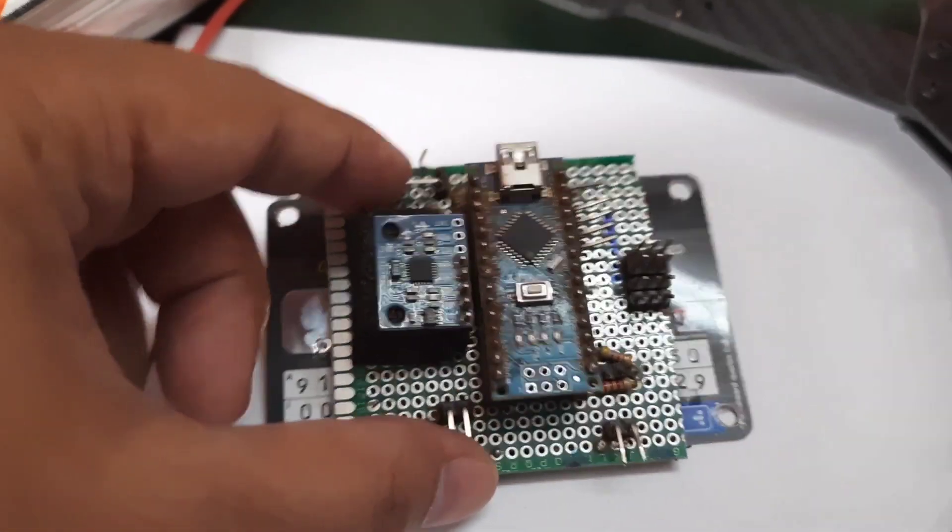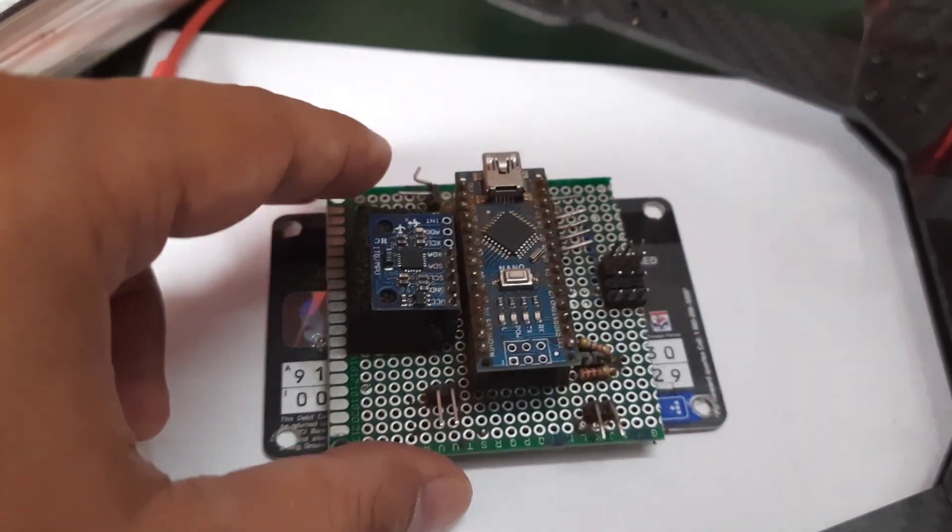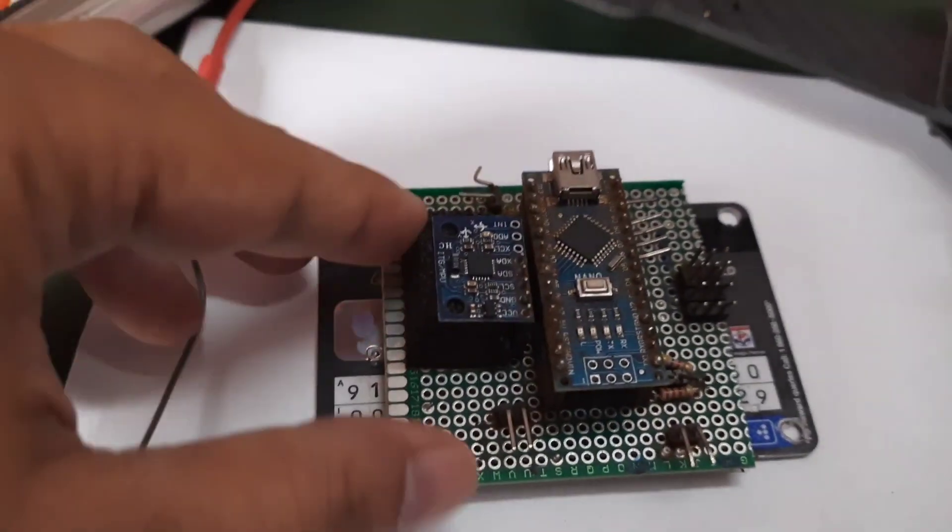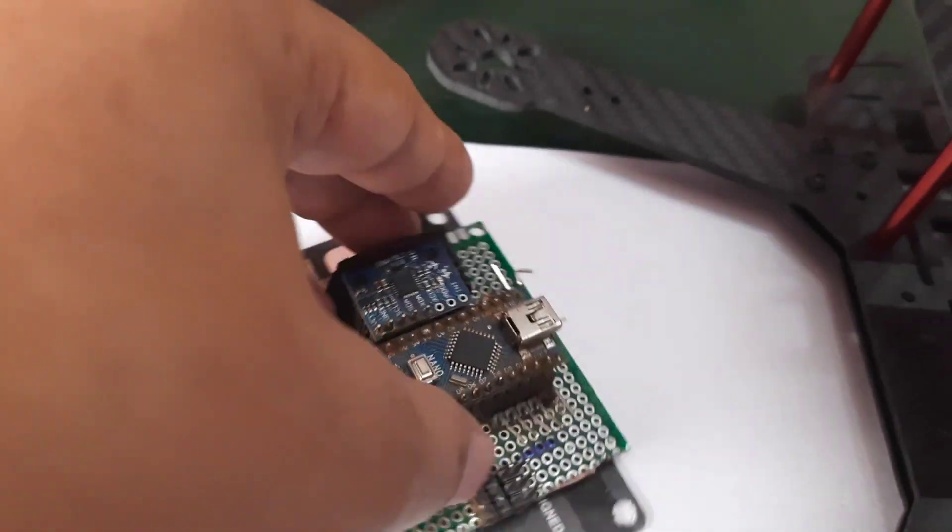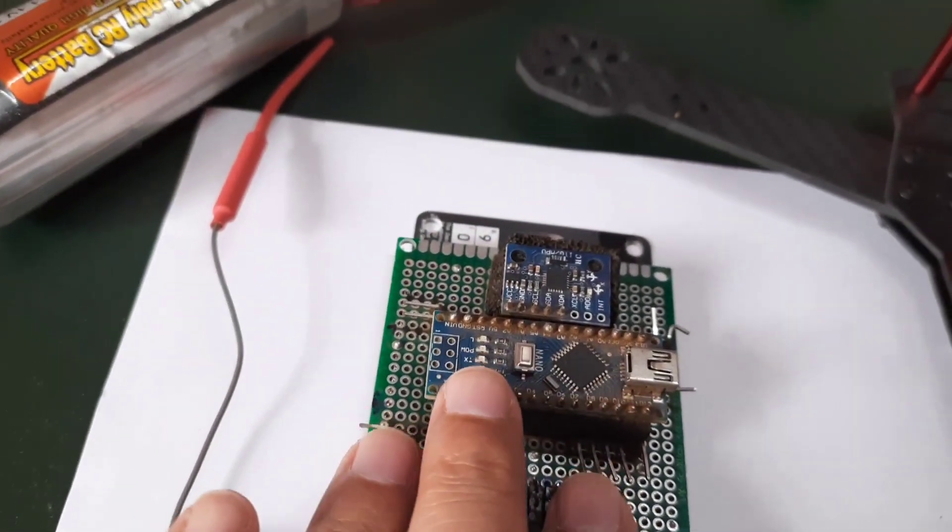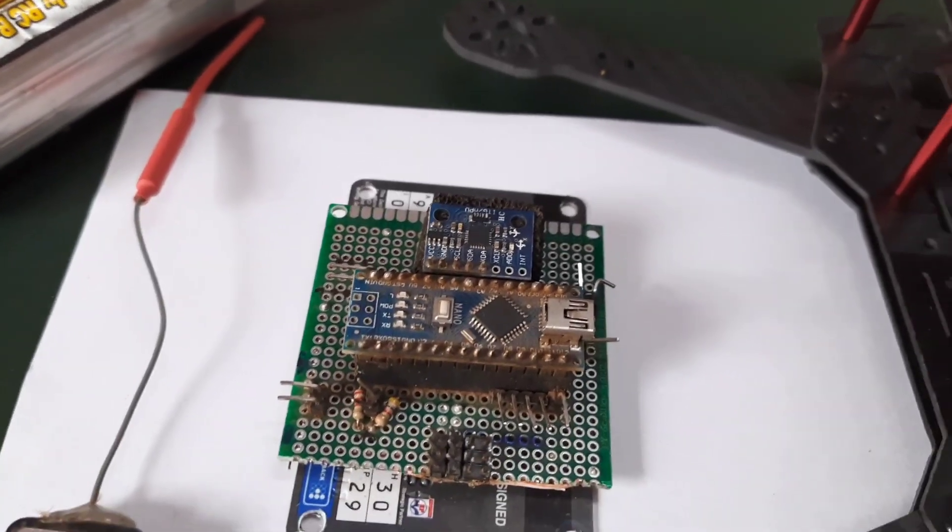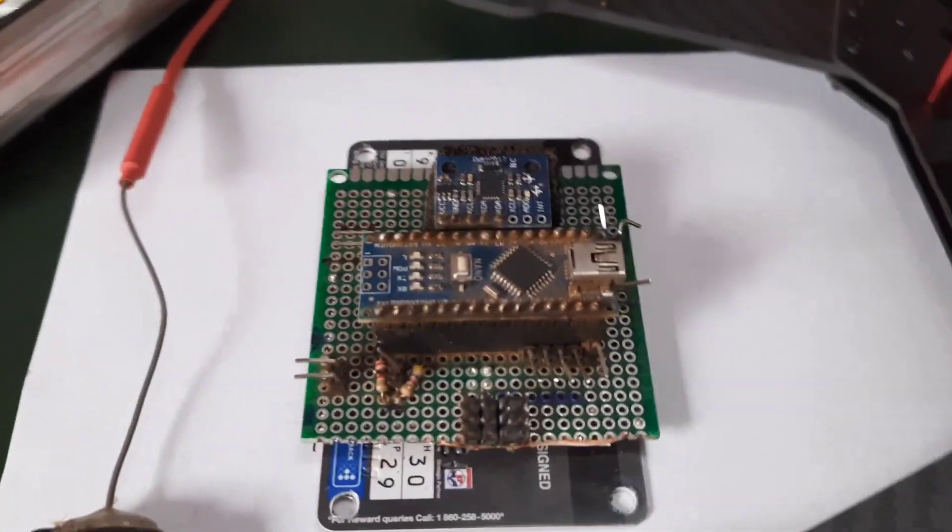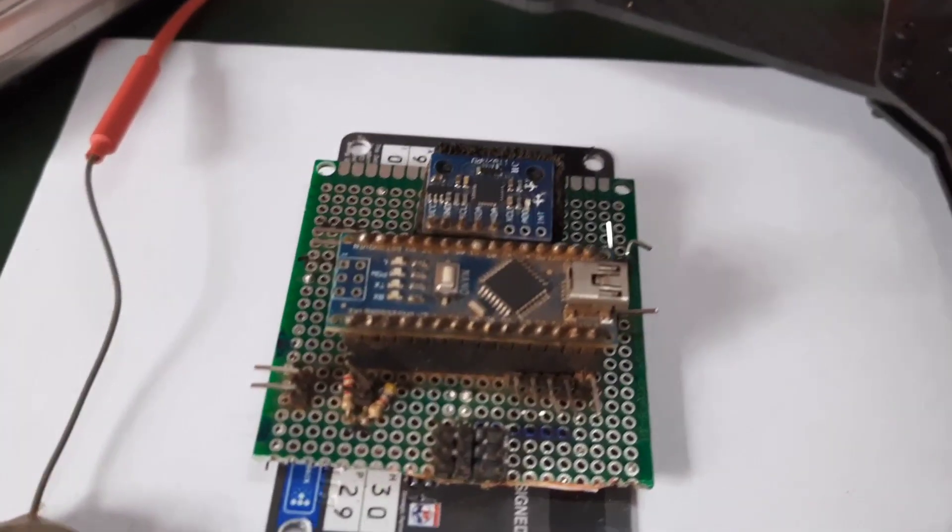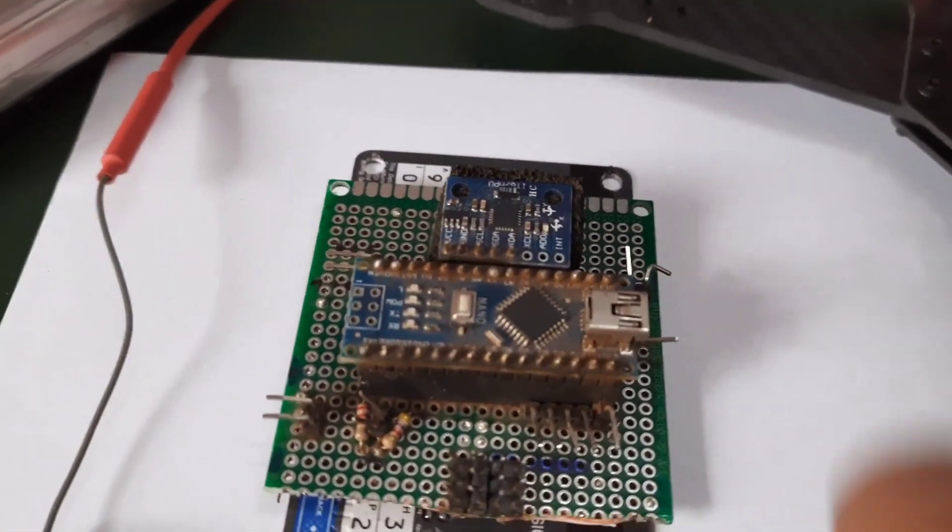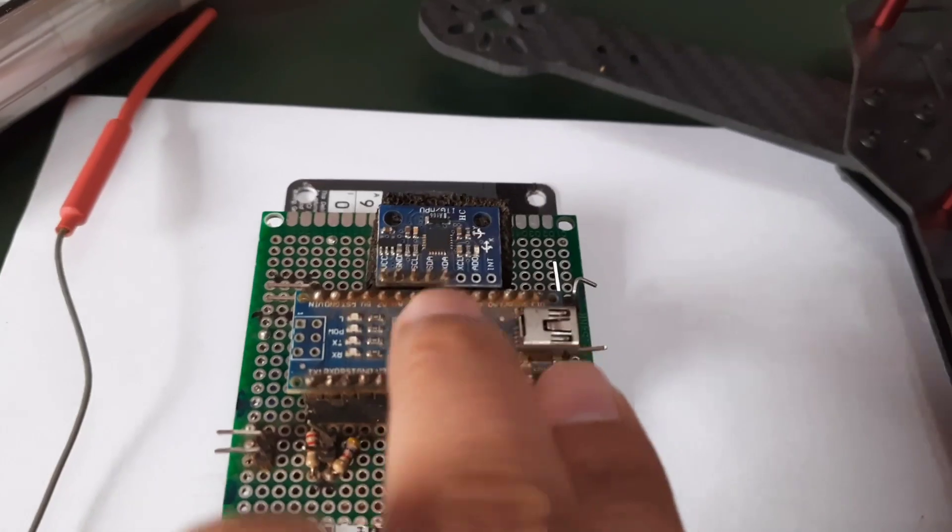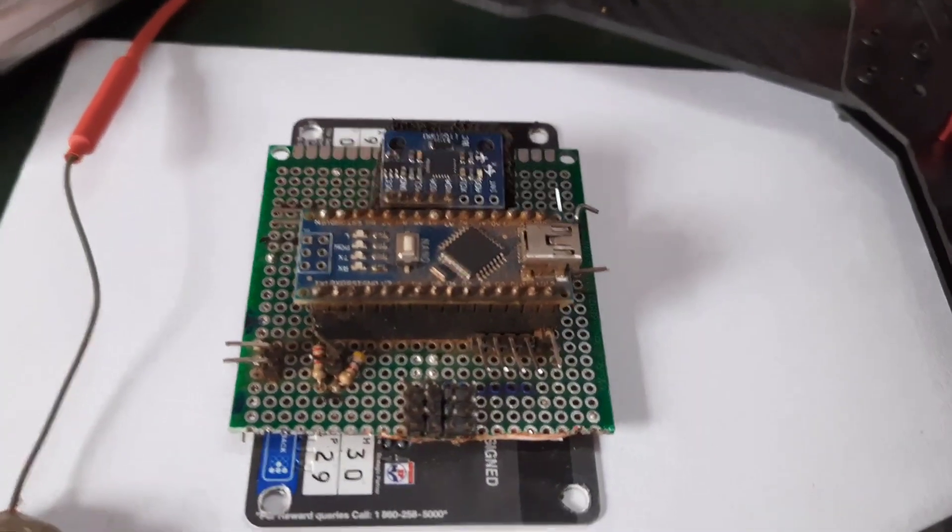So here you can see the flight controller which I have been using in the previous drone that I just showed. This is the MPU 6050, the Arduino Nano, and that's it - that's all in this flight controller. We have other accessories like the GPS, the ultrasonic sensor in the larger drone, but we will not be using any of those here. Our primary, our only objective, is to get the drone flying in a stable manner.